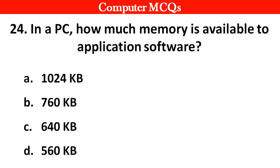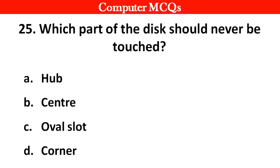In a PC, how much memory is available to application software? Right answer is option C, 640 KB.